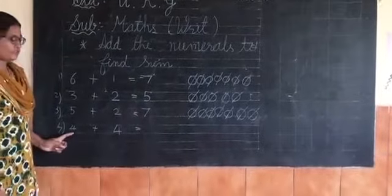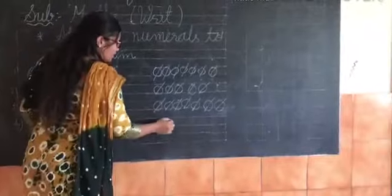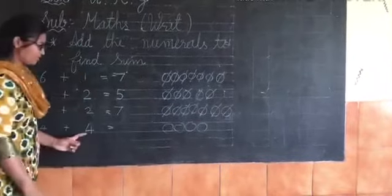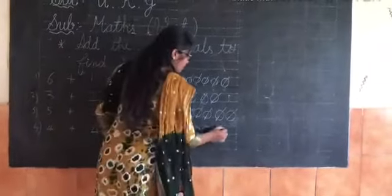Now which number is this? Four. So how many circles we have to do? Four. Then again, which number is this? Four. Make four circles.